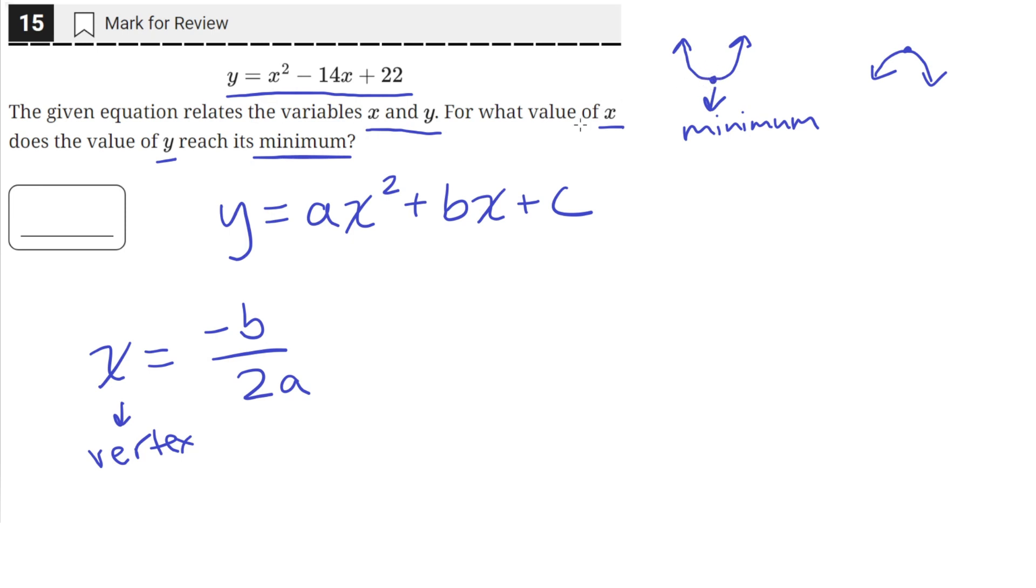What we need to do is find the x coordinate of the vertex to find the value of y where it reaches its minimum. So we can just plug that into the formula, negative b over 2a.